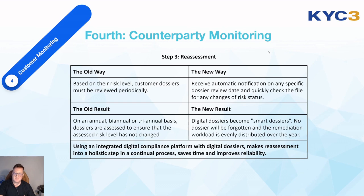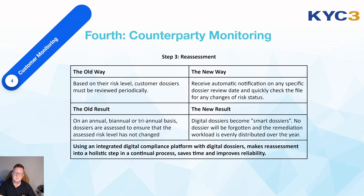The third step is reassessment. The old way is based on risk level — dossiers must be reviewed periodically on an annual, biannual, or tri-annual basis to ensure the assessed risk level has not changed. The new way is to automatically notify on any specific dossier the review date and quickly check the file for any changes of risk status, especially using an automated structure-aware system that can detect changes to the risk profile of the entire structure. The result is that digital dossiers become smart dossiers, no dossier is forgotten, and the remediation workload can be evenly distributed over the year.